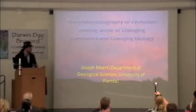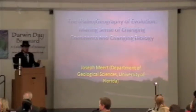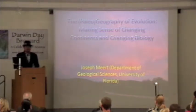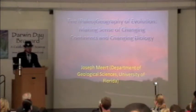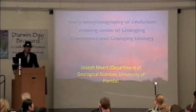Joseph Meir is a professor of geology at the University of Florida. He uses magnetic dating and his magnetic personality to examine how the continents have shifted over time. He has traveled around the world and is one of the few geologists who have the honor of being arrested in Kyrgyzstan.